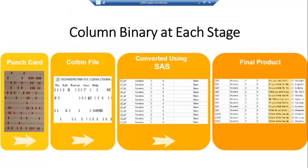Converting column binary is an esoteric and involved process. This slide shows the lifecycle of a converted column binary file — from its origination in a punched card, to column binary data, to a converted but unclean modern data format (in this picture, an SPSS file), and finally to a cleaned and converted file. I'll now hand things over to Kelsey, who will give you a brief overview of the steps we go through during the conversion process.